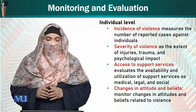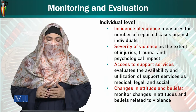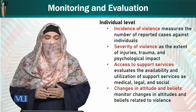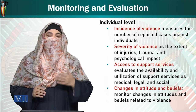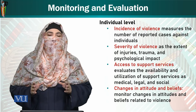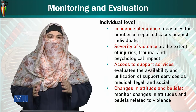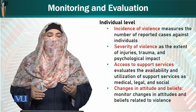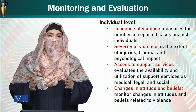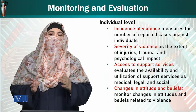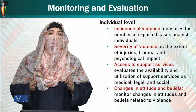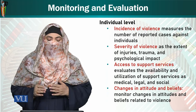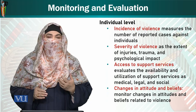Incidence of violence measures the number of reported cases against individuals. Severity of violence refers to the extent of injuries, trauma, and psychological impact. So at the individual level, first it is seen how many violence cases have been reported, then what was the intensity or severity of that violence — all of this is monitored to determine whether violence cases against children could be controlled through these strategies.